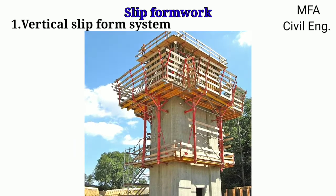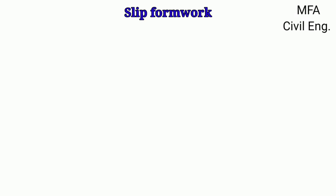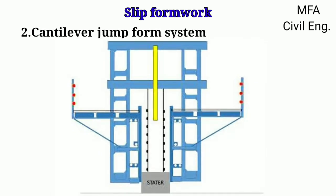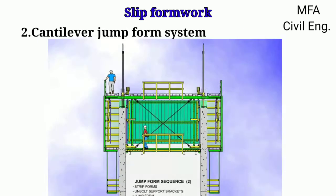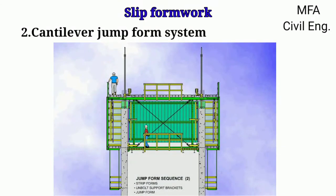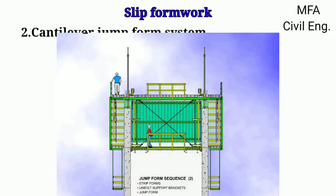In the cantilever jump form system, the lifting device is simultaneously driven by an electric motor. The main advantage of this system is that the climbers are independent of the crane and are attached to a large area of formwork at storey height. In this system, shuttering can be fixed to the already completed part of the structure between the individual levels of the climber.